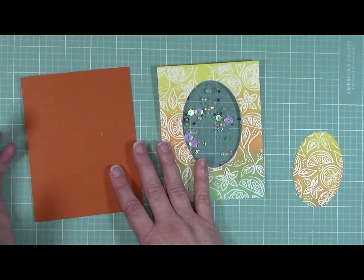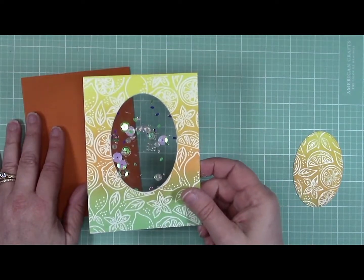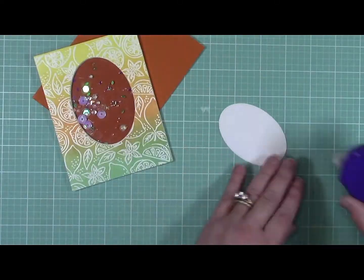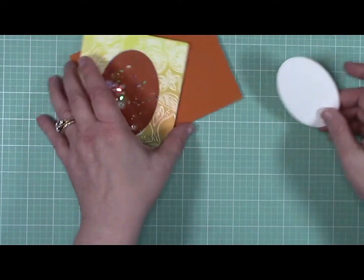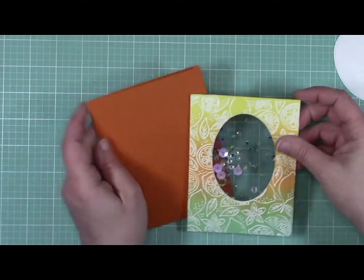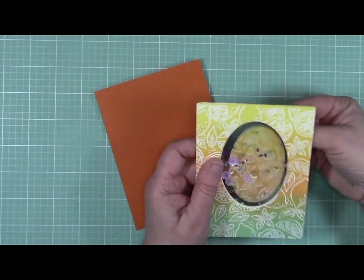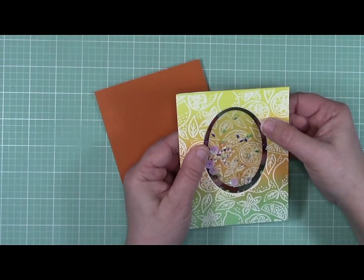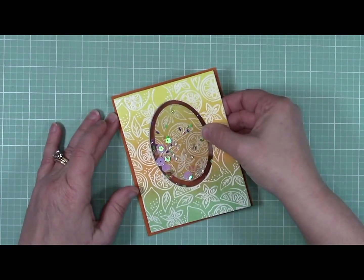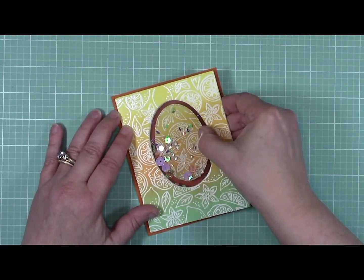It was then I realized I'd made a mistake. I should have cut a window in my card base before I started working on the front panel. So I decided to use some removable adhesive, place it behind the window in the place that I thought it would be about centered, and then placed it on my card front.